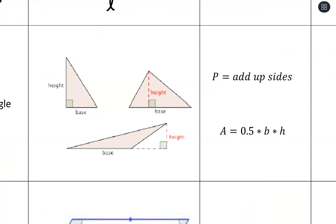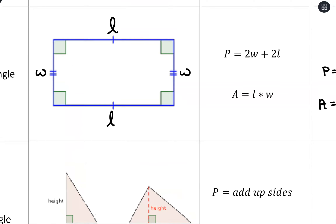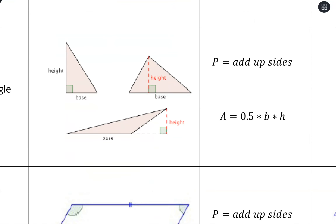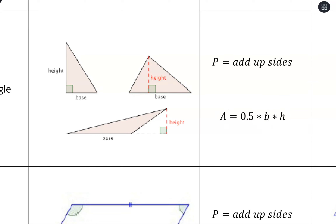For triangles, for perimeter we just add up the side lengths — that's the general rule. Just go around the outside to add up the side lengths. For area, we take one half times the base times the height. You might see this in a few different formats: base times height divided by two, or one half times base times height — all the same formula.